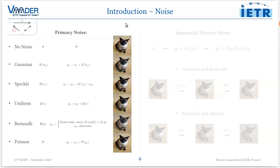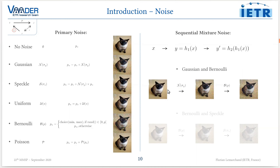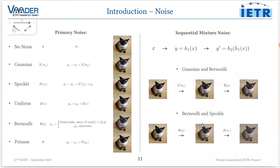What we address here is mixture noise, and especially sequential mixture noise. A sequential mixture noise is the sequential application of different primary noises — you obtain Y by corrupting X with a noise model H1, and then corrupting that result with a second novel noise model. For example, this can be the application of a Gaussian noise followed by a Bernoulli noise, or Bernoulli followed by Speckle. The difficulty is that you obtain extremely noisy images.